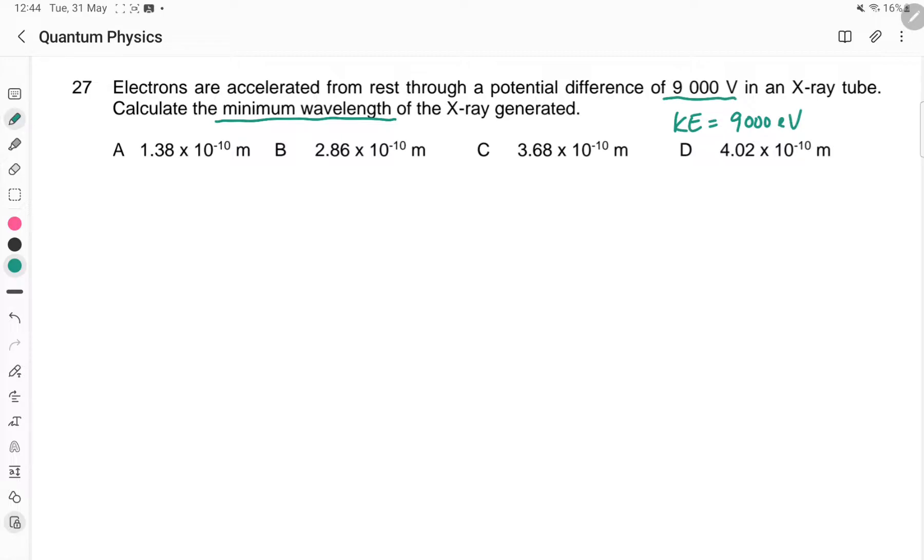And these electrons lose energy when they go near the nucleus. So when this electron loses all its energy, so let me just draw it quickly. So loses energy, give out X-ray photon. If it happens to lose all its energy in one occasion, in the first encounter.